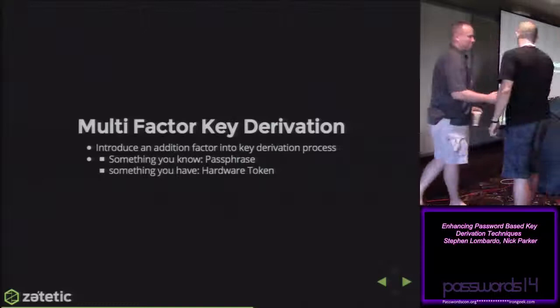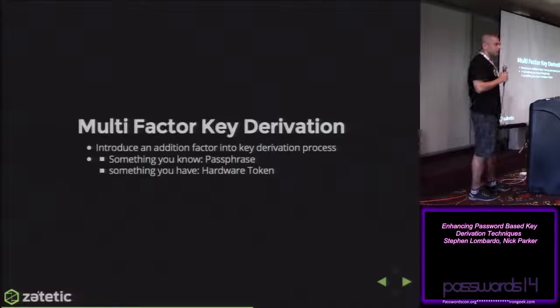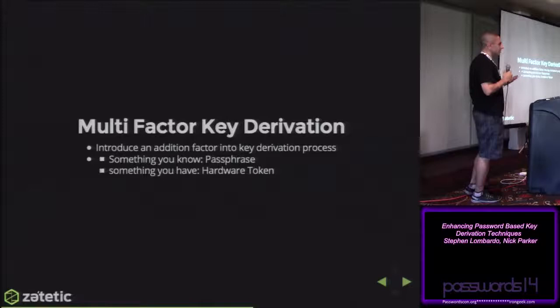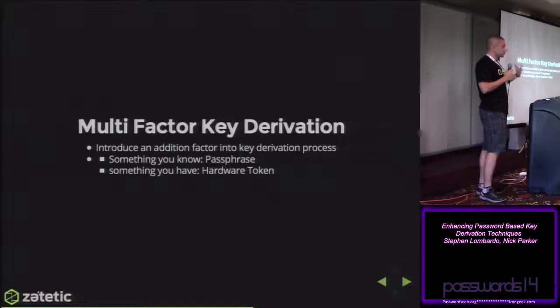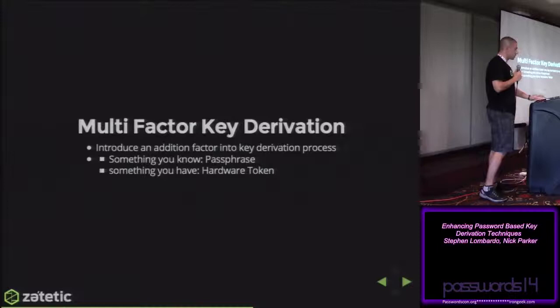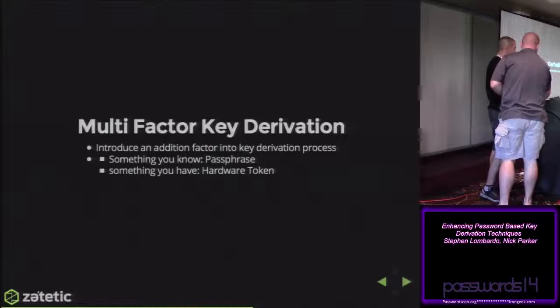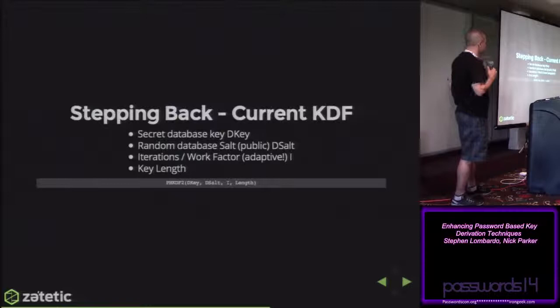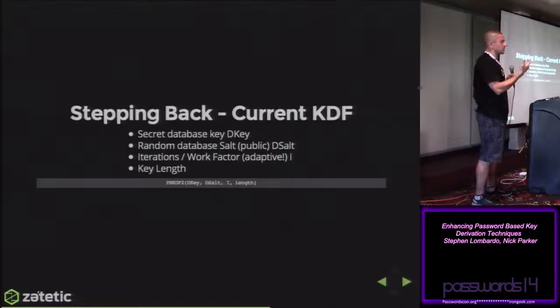The next thing we looked at, in terms of enhancing our standard key derivation functions, is how we might be able to integrate a multi-factor scenario where getting access to a database is no longer just about one factor — the passphrase — but also requires something you have, something on your person. Our current KDF is PBKDF2, and the inputs are essentially the database key provided by the user as a passphrase, plus a random database salt stored at the front of the file and generated randomly for every individual database. And we have the new adaptive work factor — all combined and passed into PBKDF2 to generate our encryption key used to encrypt page data.